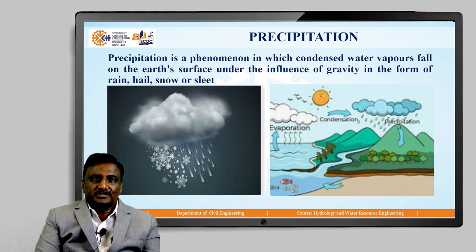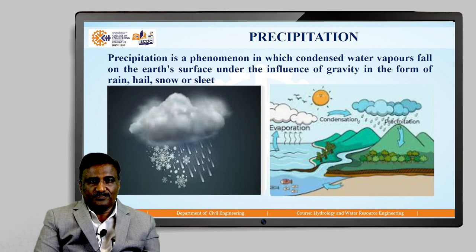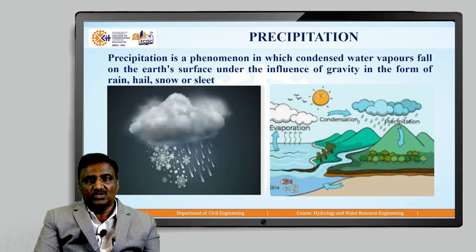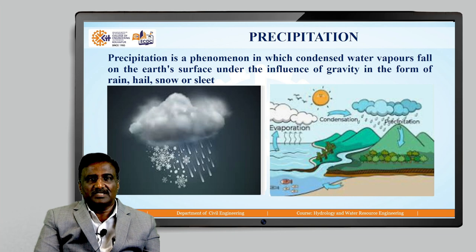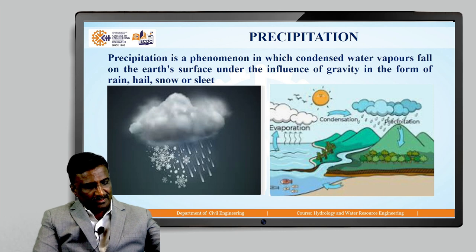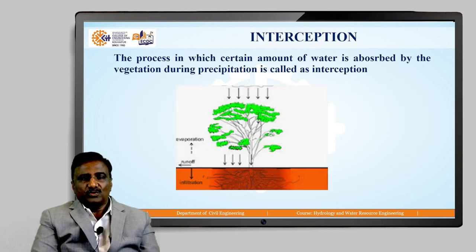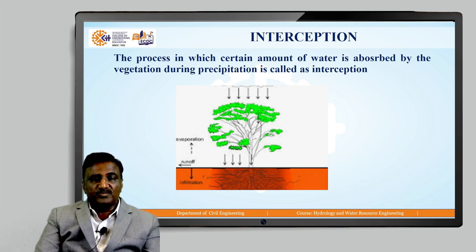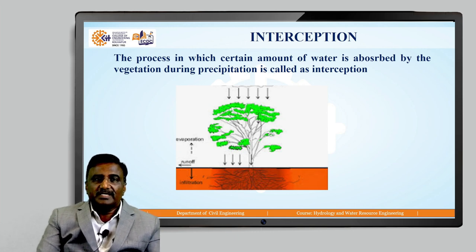Next, precipitation. Precipitation is a phenomenon in which condensed water vapor falls on the earth's surface under the influence of gravity in the form of rain, hail, snow, or sleet. You can see in the picture how precipitation occurs. Next, interception: it is the process in which a certain amount of water is absorbed by vegetation during precipitation — this is called interception.